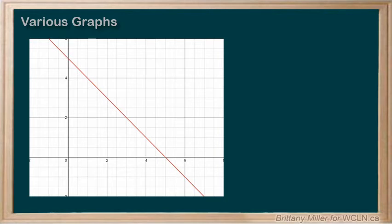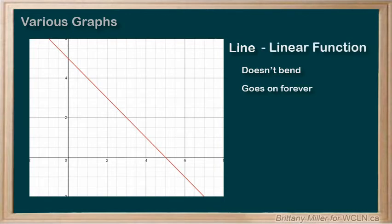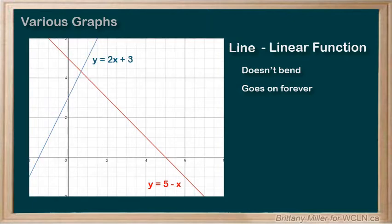The simplest graph that we can look at is a line. It doesn't bend, which means it has a constant slope, and it goes on forever in both directions. We call this a linear function or linear relationship, and its equation will look something like 5 minus x, or 2x plus 3.